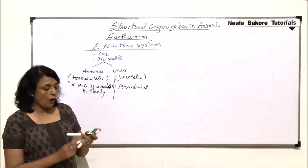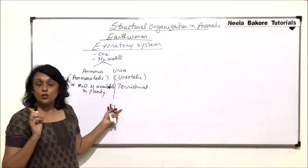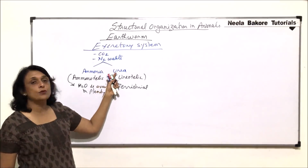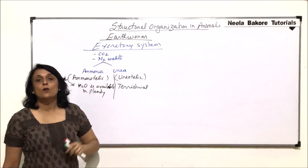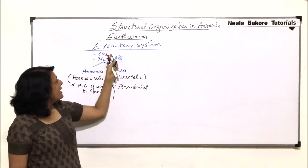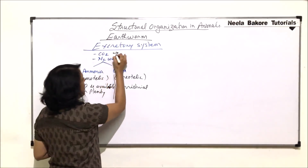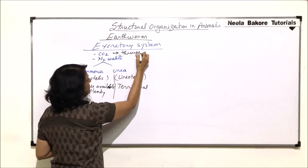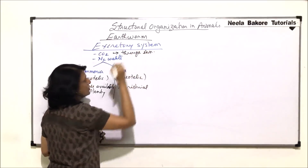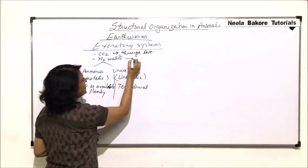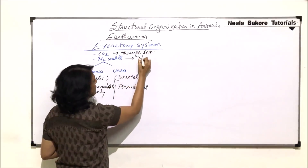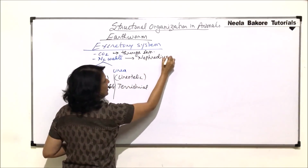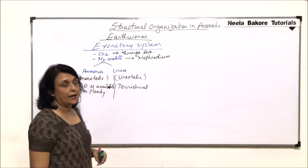The structures which help in elimination of nitrogenous waste are called nephridia. Carbon dioxide is lost through the skin, so no special structure is required for that. The structure for nitrogenous waste removal is nephridium (singular) and nephridia (plural).